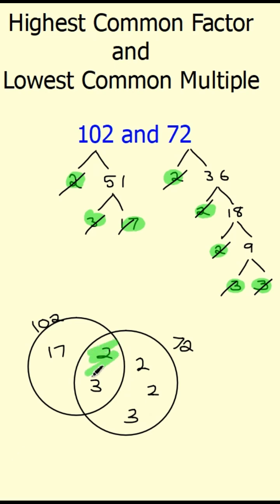Now, the highest common factor is the multiplication of those in the middle, which would be 6. 2 times 3 is 6.